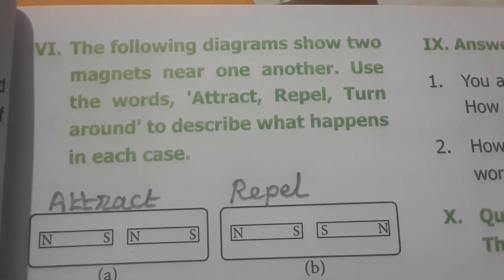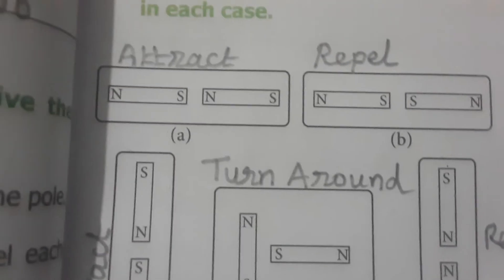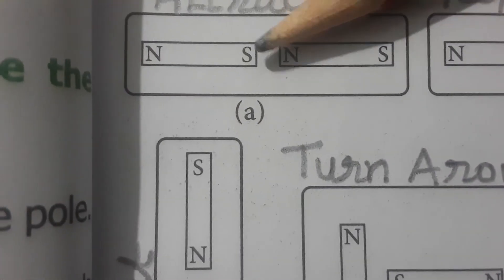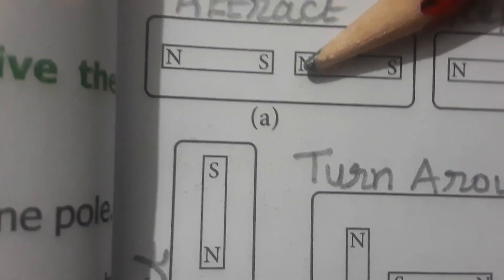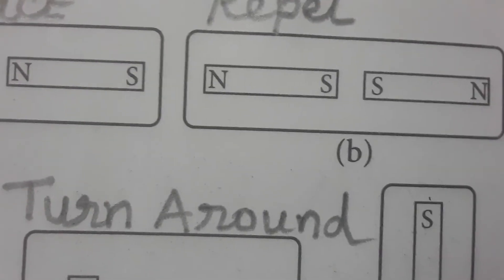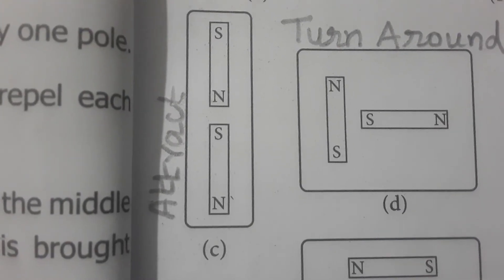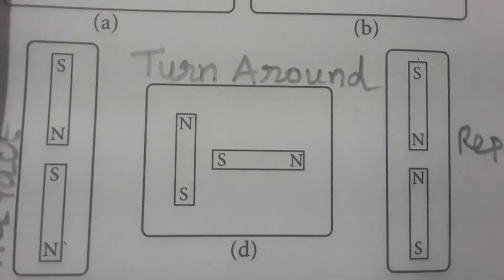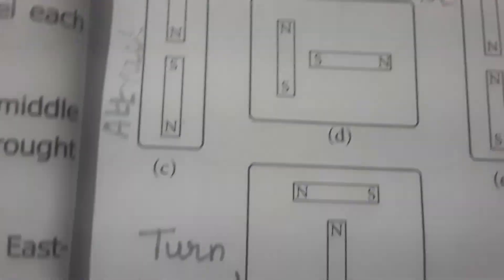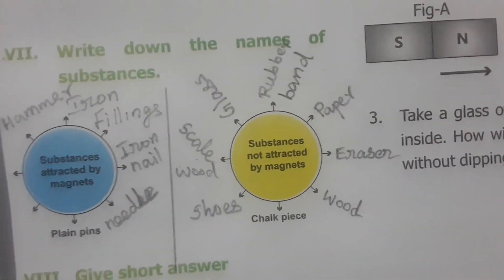A diagram shows two magnets near one another. Option A: the south pole of one magnet and the north pole of another magnet come close — they attract. Option B: south pole and south pole — like poles, so repulsion. Option C: north and south poles are close together — they attract. Option D: magnets turn around and then attract. Option E: north and north poles are like poles — they repel. Option F: turn around is the correct answer.